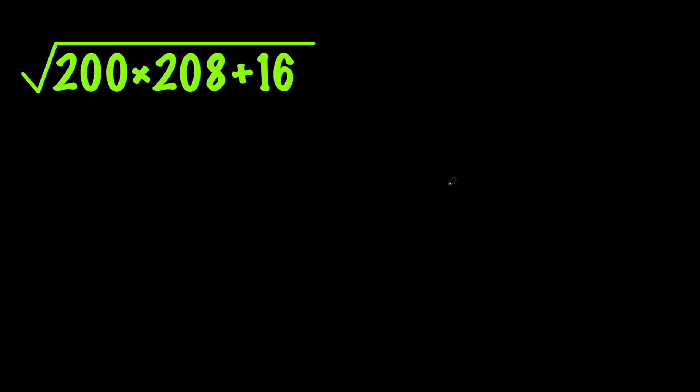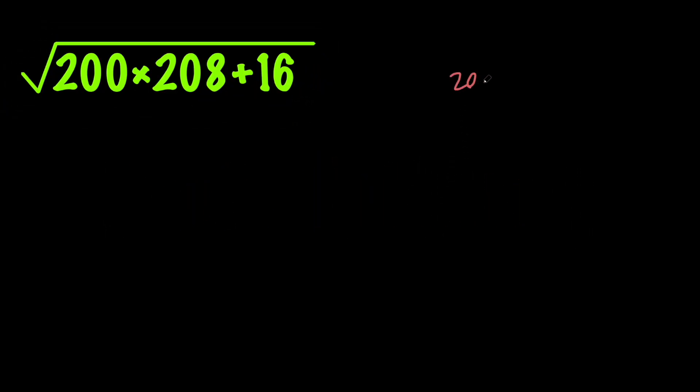So we're going to do that in two ways. Let's go ahead and start with the first method. We're going to replace 200 with 204 minus 4, and we're going to replace 208 with 204 plus 4 to form a product of two conjugates.